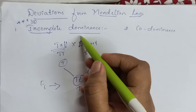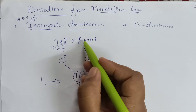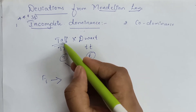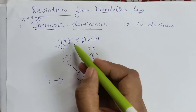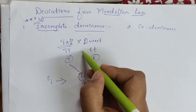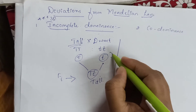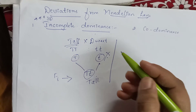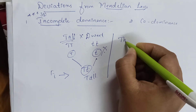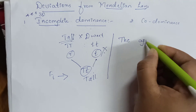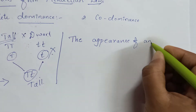By seeing the title you can understand incomplete dominance. In some cases, one allele is incompletely dominant over the other allele — that means the dominant allele sometimes will not express completely. As a result of that, we can see one intermediate character. This does not apply for the monohybrid example I took earlier — that was just for reference.